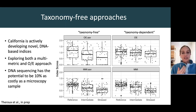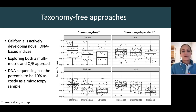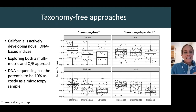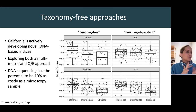This has been inspiring a lot of the work we're doing here in California, where we're now developing both taxonomy-free as well as more traditional taxonomy-dependent approaches, all using DNA data in place of morphotaxonomic or microscopy-based data. We're actively developing these novel DNA-based indices — looking at diatom communities at reference and impacted sites, exploring both a multi-metric index as well as the O/E approach. Right now we're seeing that DNA sequencing has the potential to be 10% as costly as microscopy-based analyses for these samples, which has been one of the biggest motivators for generating DNA-based data for algal bioassessment.